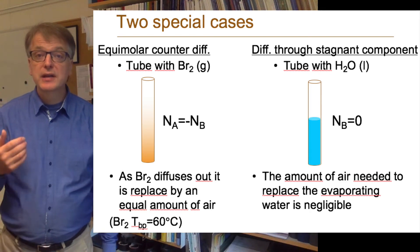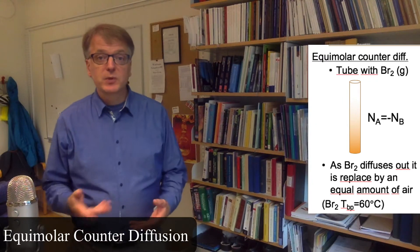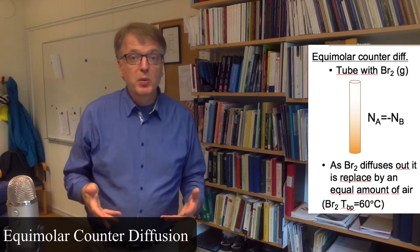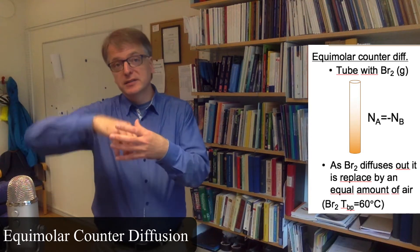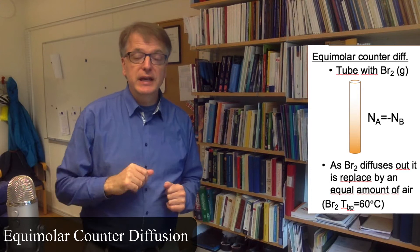Let's talk about the special case of equimolar counter diffusion. For example, you can have a cylinder which is half filled with bromine gas, and the bromine gas diffuses out and is being replaced by air diffusing in.